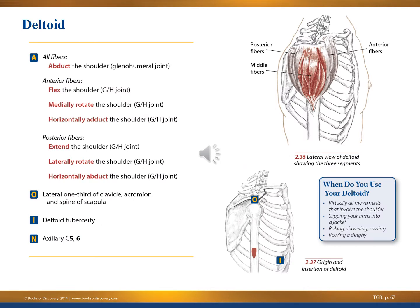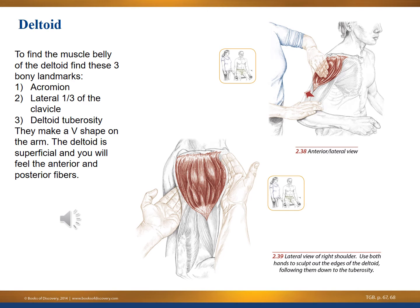The deltoid muscle slide shows the action, origin, insertion, and innervation — a classic from school. You don't have to memorize all of it, but be very familiar with where the deltoid is located. To find the muscle belly of the deltoid, find these three bony landmarks: the acromion, the lateral one-third of the clavicle, and the deltoid tuberosity. They make a V-shape on the arm. The deltoid is superficial and the anterior and posterior fibers are quite easy to feel.